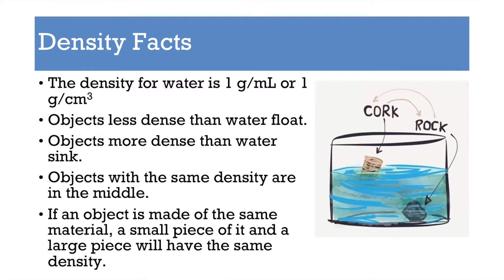A quick few density facts. Density for water is 1 g/mL or 1 g/cm³. Remember density is mass over volume, so grams would be our unit of mass and milliliters would be our unit of volume. In this case, grams is still our unit of mass and now our unit of volume is centimeters cubed. Objects that are less dense, if we're talking about water, will float. Objects that are more dense in water will sink in water, and objects with the same density will kind of float there in the middle.